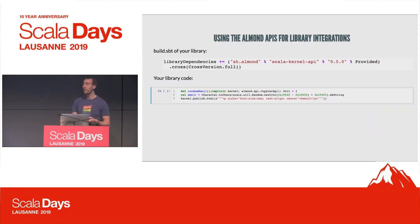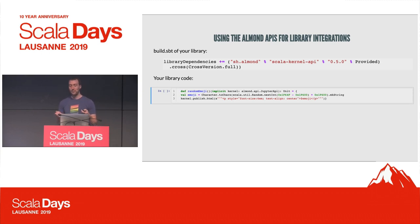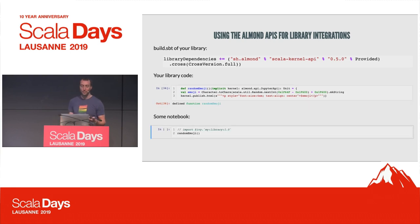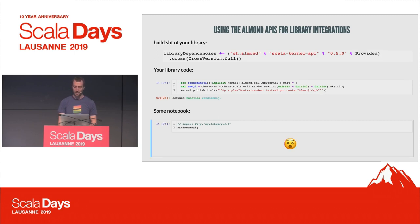And we can use these APIs in our own libraries, which we can then provide to notebook users. So we could depend on the Scala kernel API and then use it in our library. We'd have this implicit instance of the Jupyter API available, and we can use that to send output to the frontend. Then in our notebook, we can just import this library and use it.